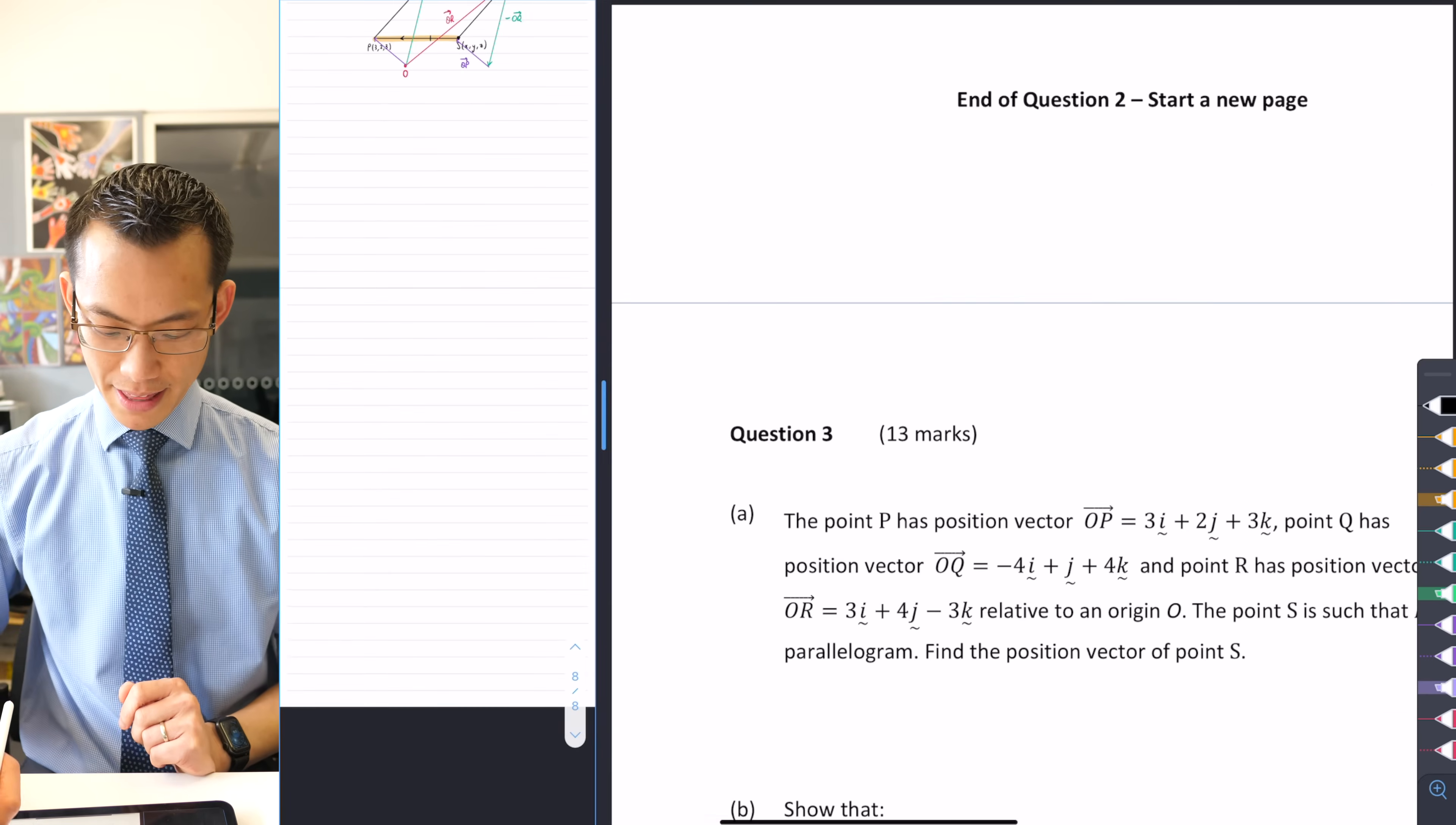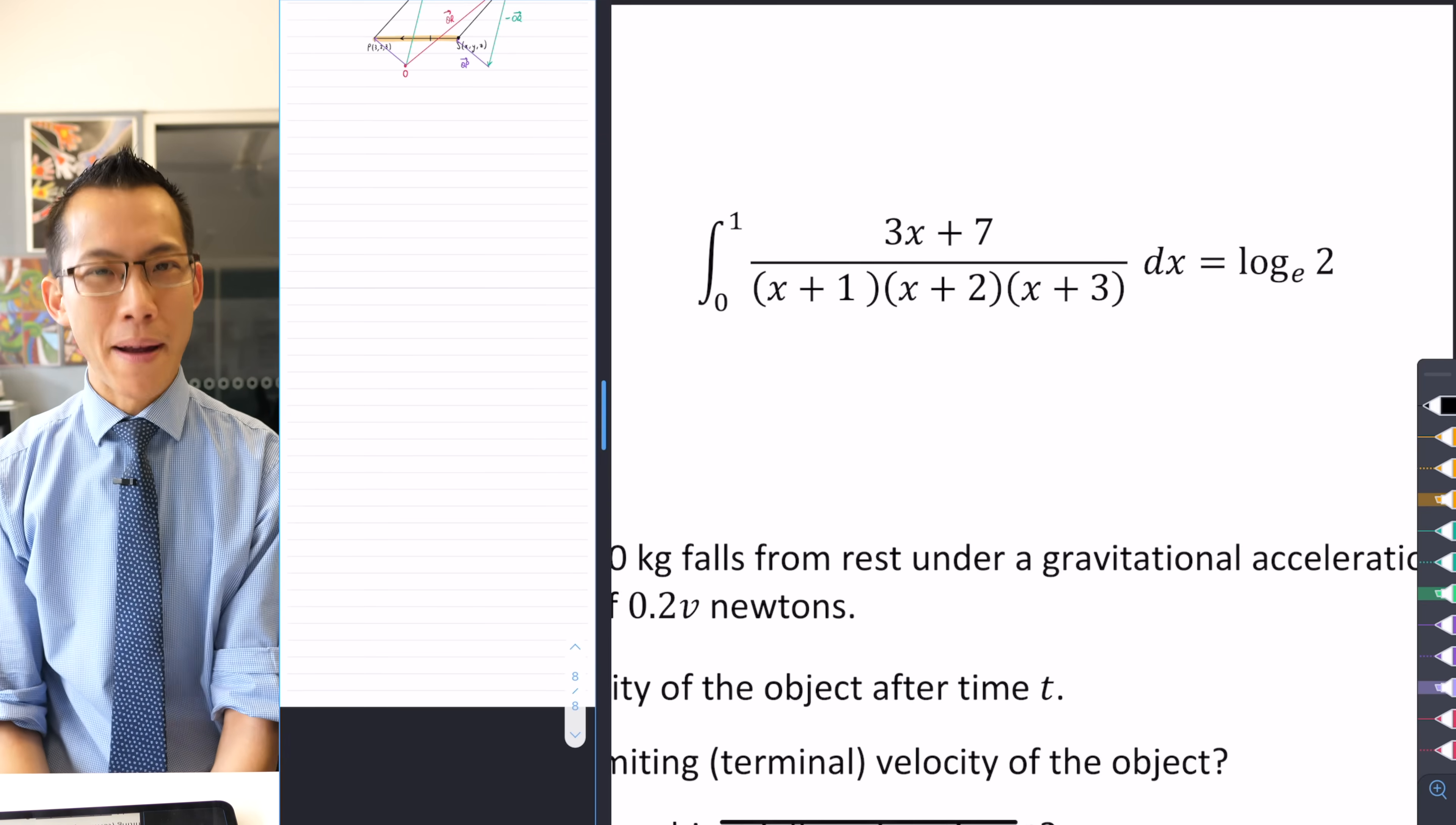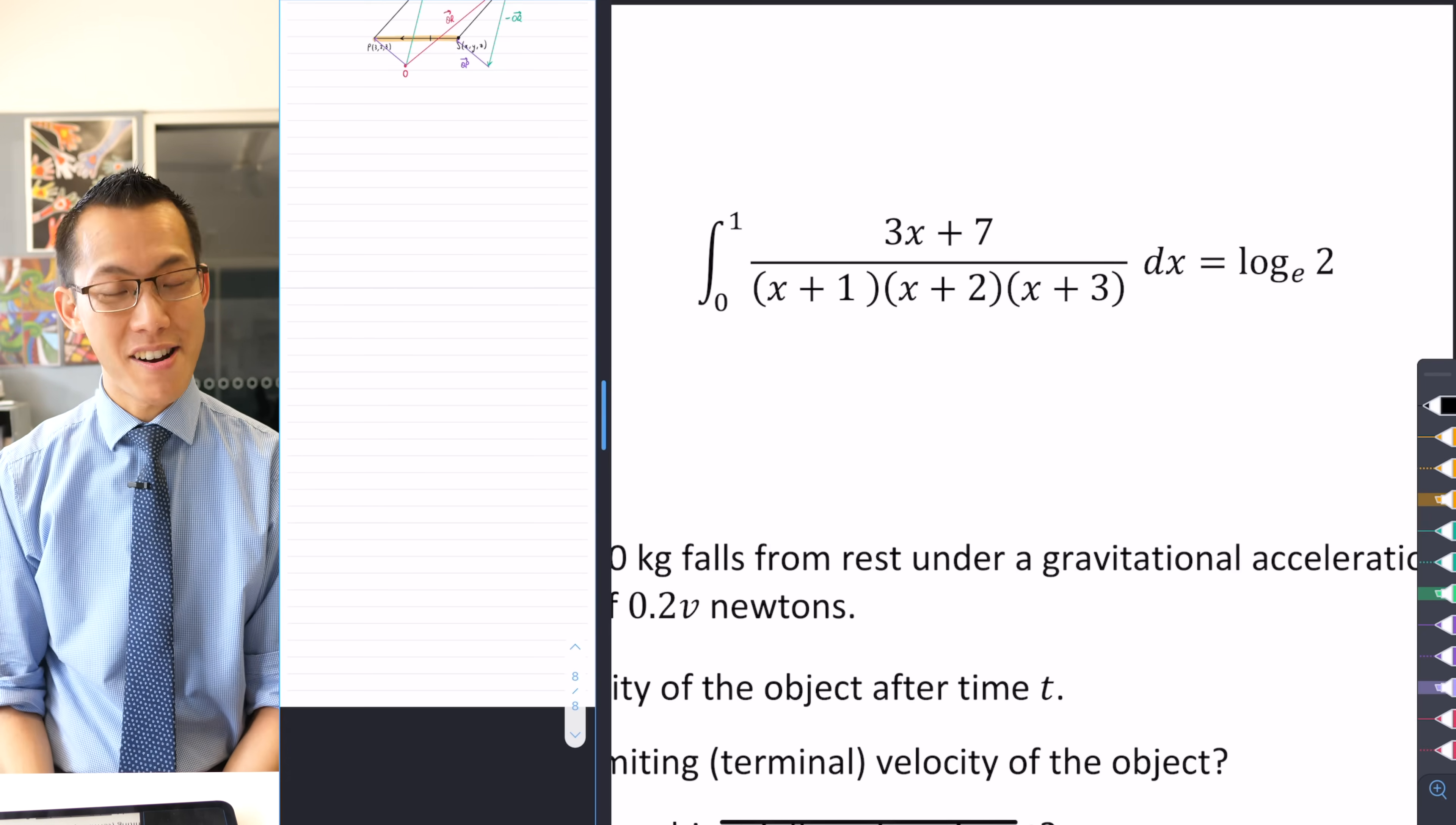Let's have a look at part B together. Second last question, show that, and you've got this messy looking integral on the left hand side. Look at that terrible integrand, but apparently somehow if we do this right it's all going to beautifully simplify down into log 2. So how can we get there?